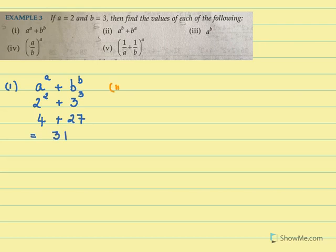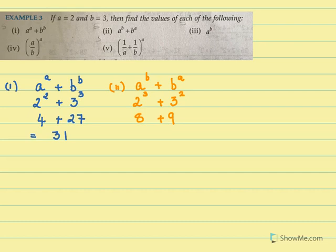For the second sum, it is A raised to B plus B raised to A. Now A is equal to 2 and B is equal to 3. So 2 raised to 3 is 2 into 2 into 2, which is 8. And 3 raised to 2 is 3 into 3, that is 9. So I have 8 plus 9, which is equal to 17.